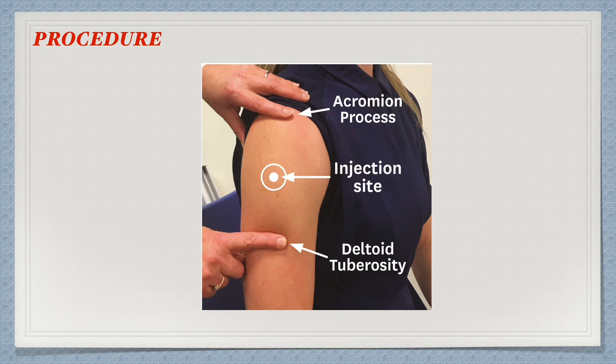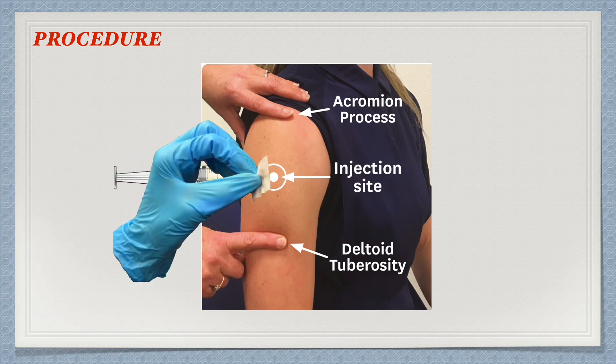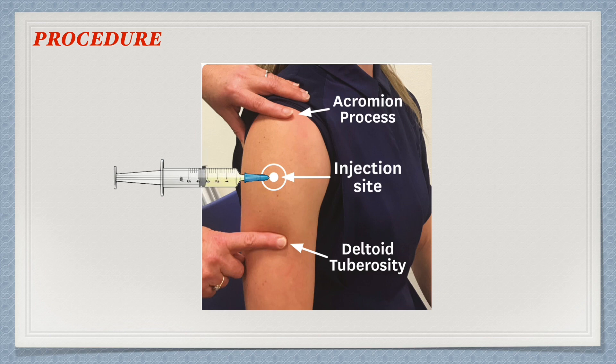Pierce the needle at a 90-degree angle. Before injecting the medication, aspirate the syringe to check if any blood is coming. If blood is coming, discard the medication and prepare new medication. Then inject the medication slowly. After injecting, withdraw the needle slowly while supporting the surrounding tissue. After withdrawing the needle, apply counter pressure over the injection site to prevent bleeding.